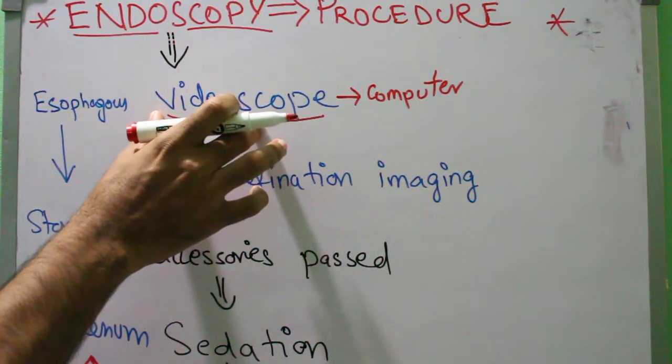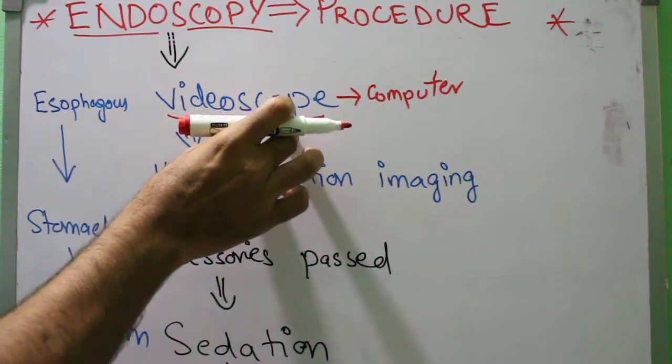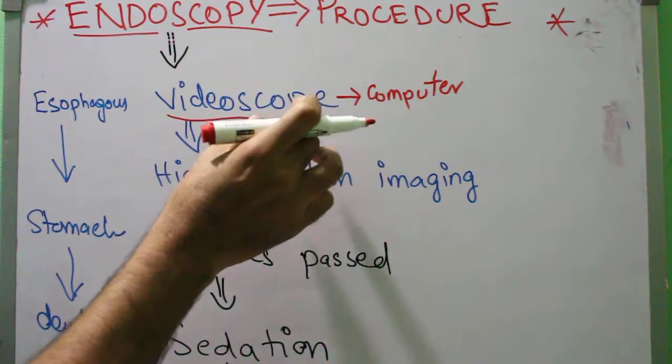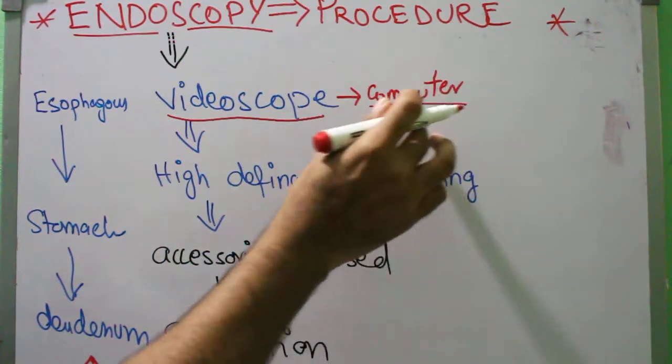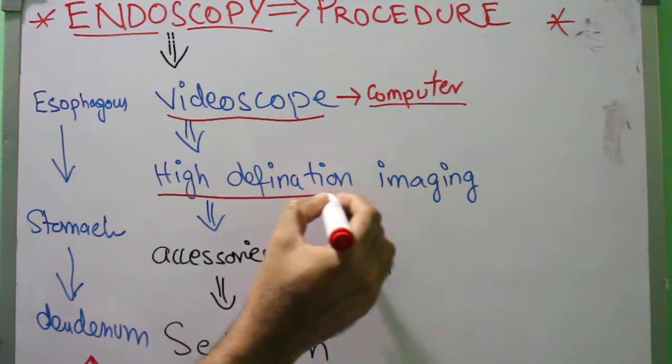A video of your stomach, duodenum, and esophagus. It is connected with the computer, and the videoscope starts. Now the high definition imaging procedure.